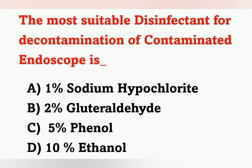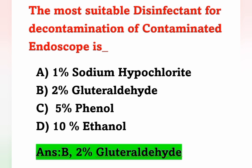Next question: The most suitable disinfectant for decontamination of contaminated endoscopes is which of the following? Options: A) 1% sodium hypochlorite, B) 2% glutaraldehyde, C) 5% phenol, D) 10% ethanol. Contaminated endoscopes can be disinfected using 2% glutaraldehyde. Option B is the correct answer.